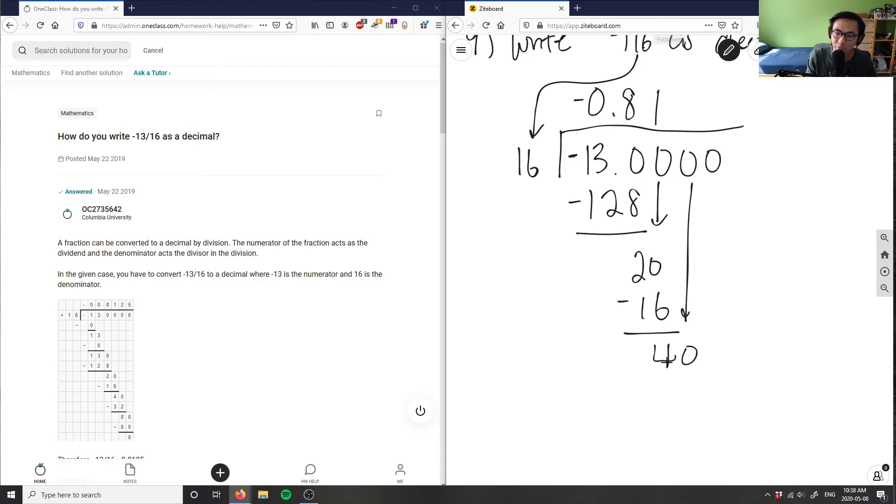What goes into 40? Well, 16 times 1 is 16. 16 times 2 would be 32, that's going to be our closest. So 16 times 2 is 32. 2 times 6 here is 12. 2 times 1 here is 2, plus 1 is 3. So 40 minus 32 here is 8.